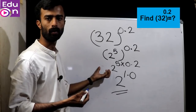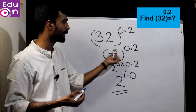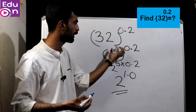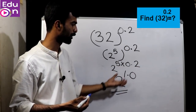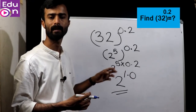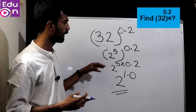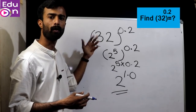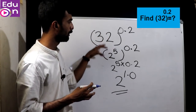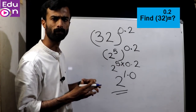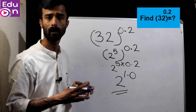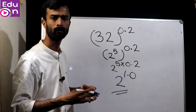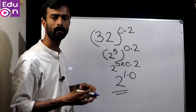2 raise to 5, 32 hold raise to 0.2. We will learn A raise to M, hold raise to N, hold raise to M. The thumb rule: 2 raise to 5 × 0.2 = 2 raise to 1.0. Then 64 raise to 1.0, 4 raise to 1.0. We will change the value by multiplication. The answer is 3.0. Let us come to the next question.